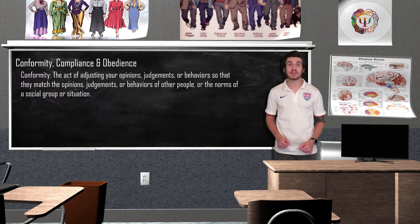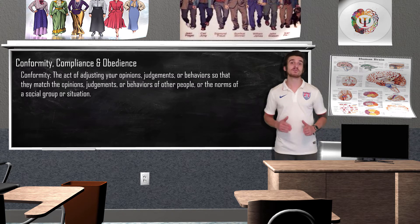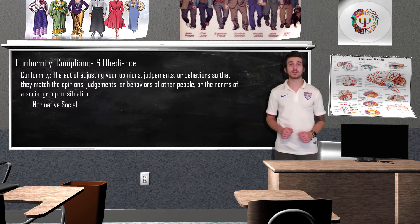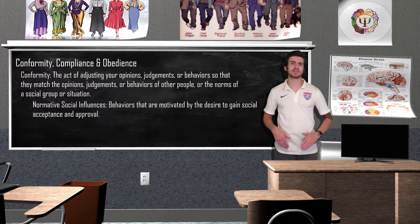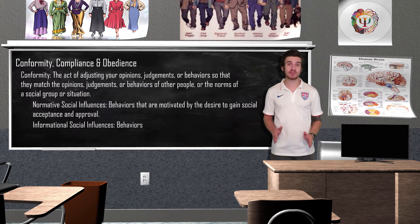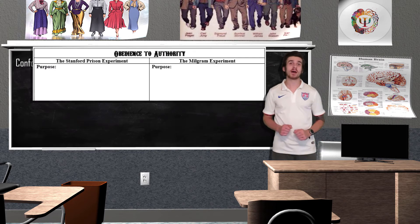After 18 trials, in the control group with no pressure to conform to actors, the error rate was less than 1%. Even in the experimental group, a majority of participants' responses remained correct, meaning they went against majority opinion. However, a sizable minority of 36.8% of participants conformed to the actors' incorrect responses. Asch stated that intelligent, well-meaning young people are willing to call white black is a matter of concern. According to social psychologists, there are two types of social influences that influence our willingness to conform. Normative social influences are behaviors motivated by the desire to gain social acceptance and approval. Informational social influences are those behaviors motivated by the desire to be correct — when we are uncertain, we might look towards the group as a source of accurate information.